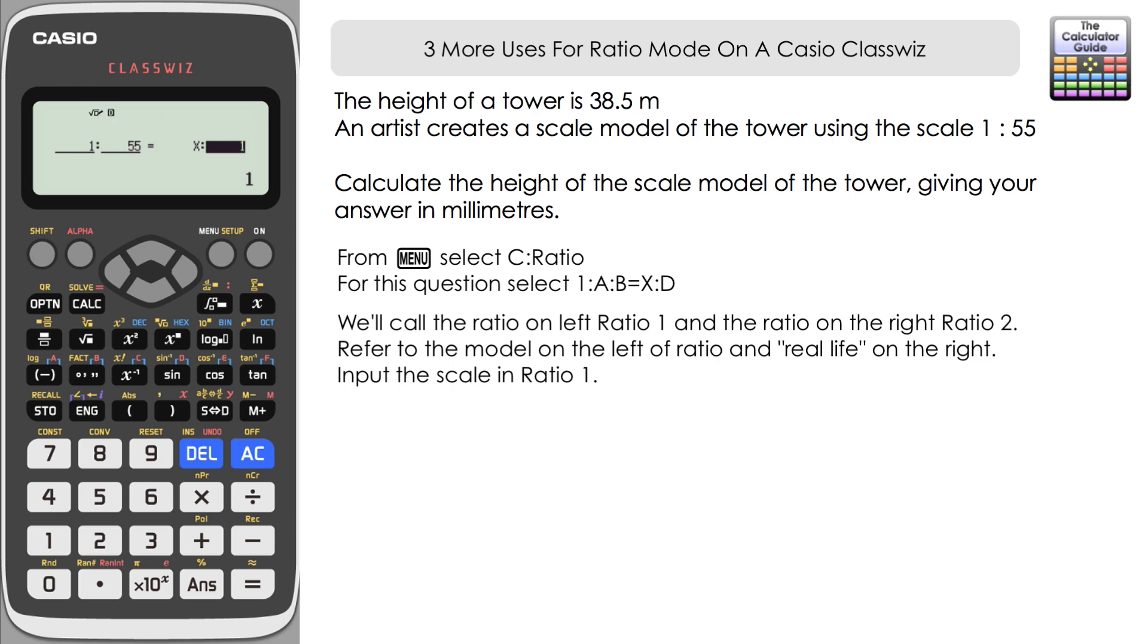Once we've inputted the 1 to 55 we're going to move on to ratio 2. And once again it's model on the left, real life on the right. In real life we know the tower is 38.5. So that's why we've done option 1 from the ratio mode, so we can put that on the right-hand side here, 38.5.